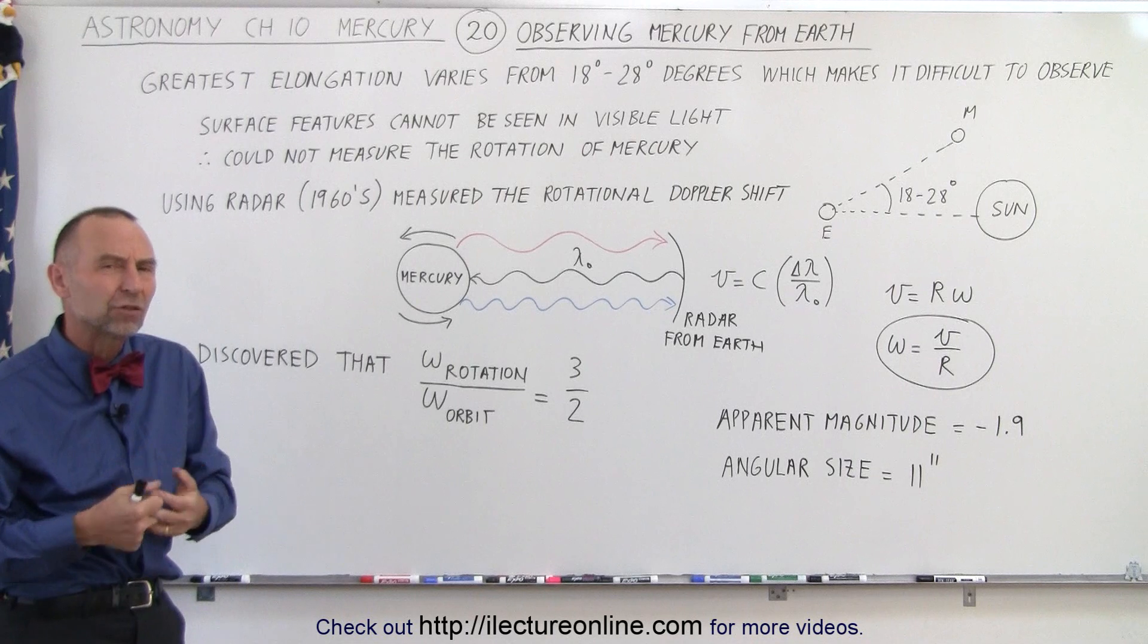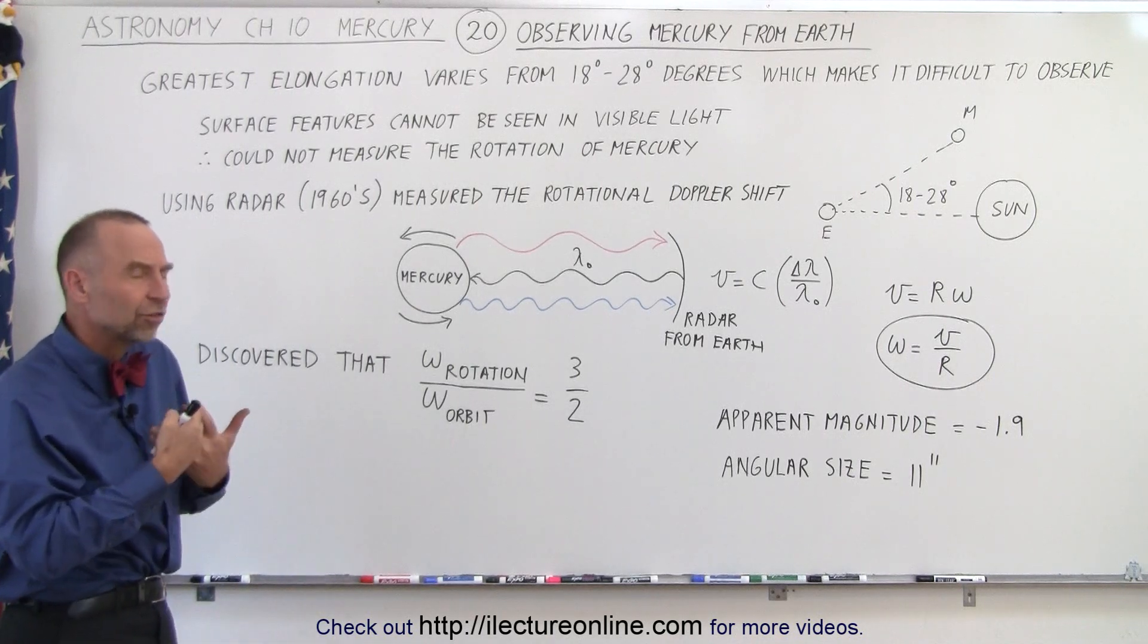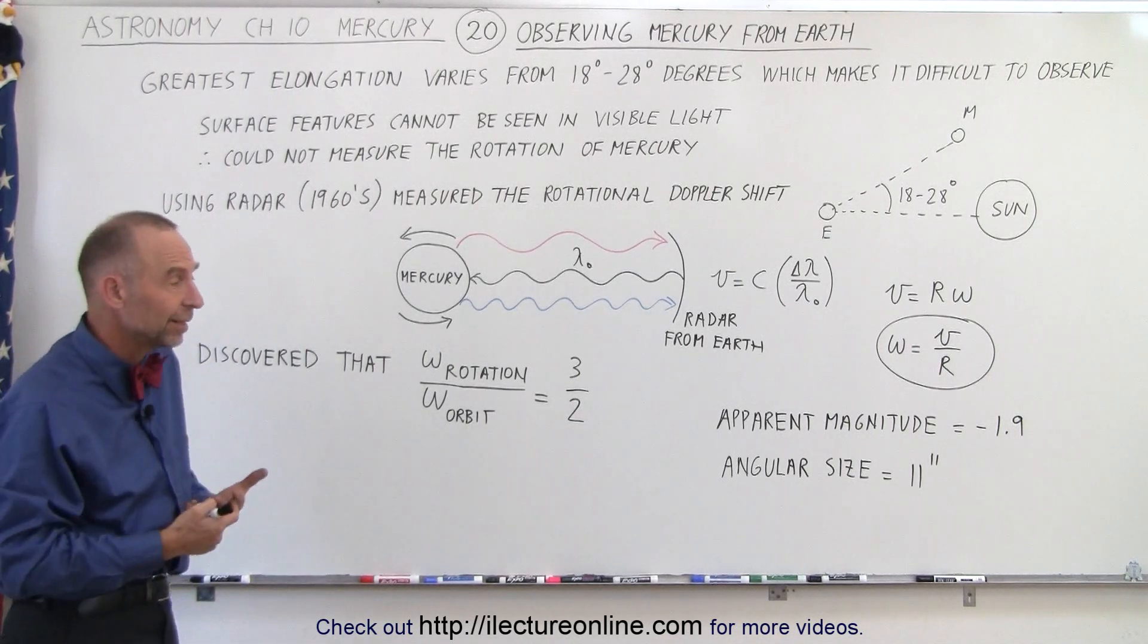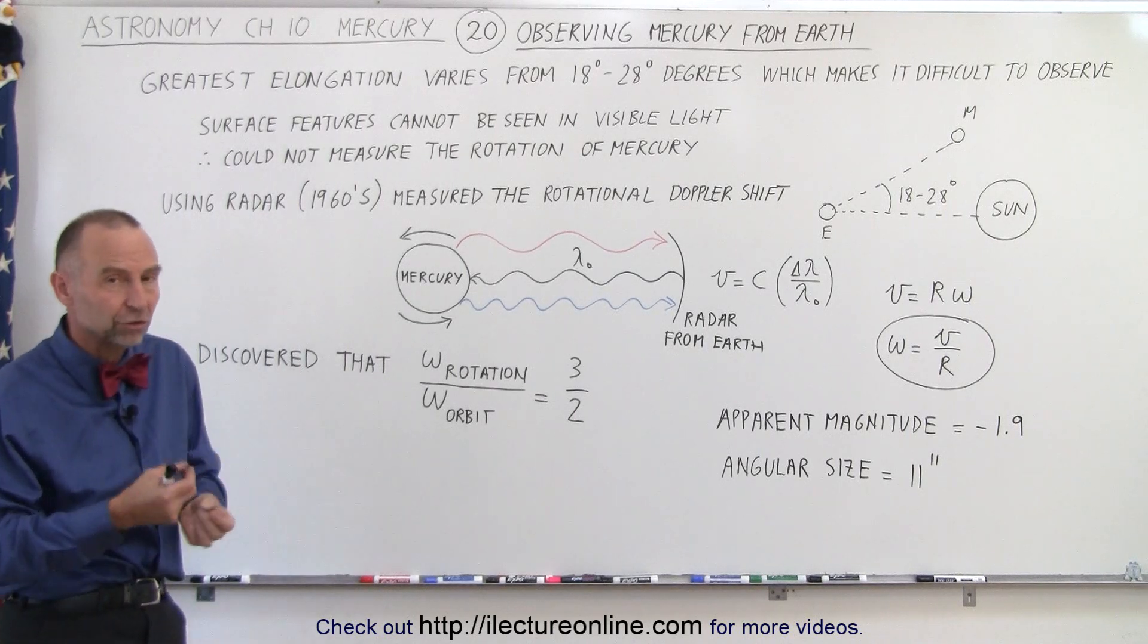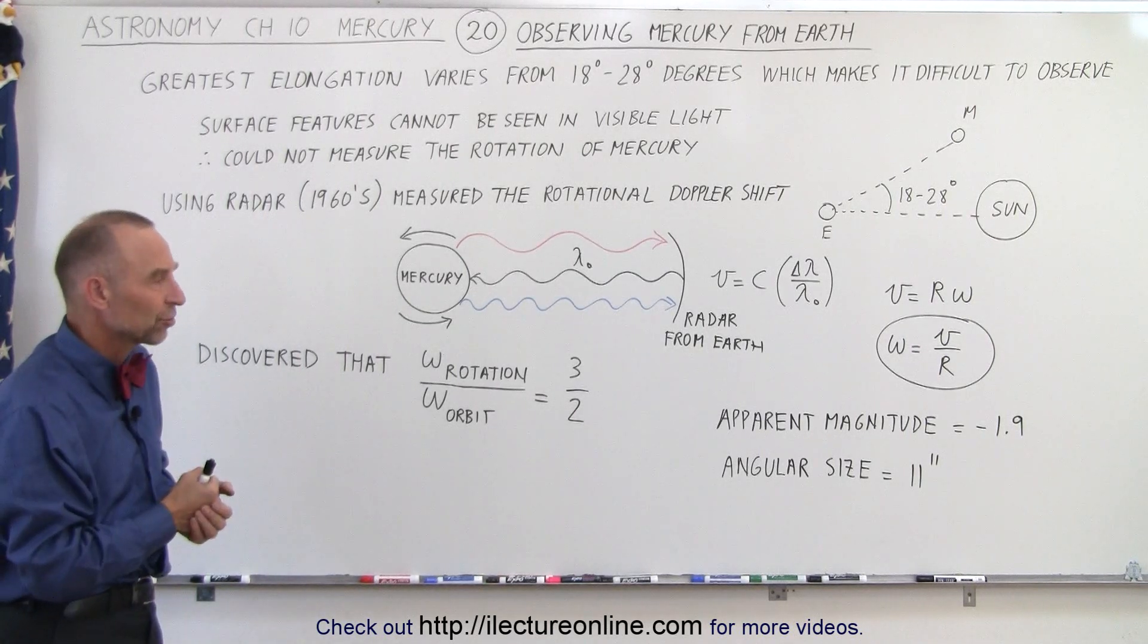The albedo of the planet is also not very high. In other words, it doesn't reflect a lot of the light that it gets from the Sun, so again, that makes it more difficult to see the specific features on the surface.